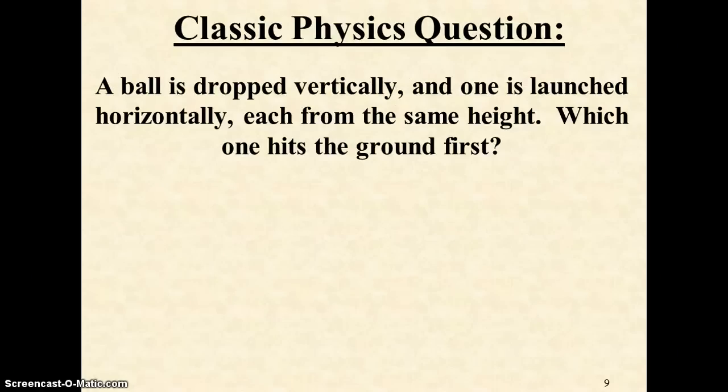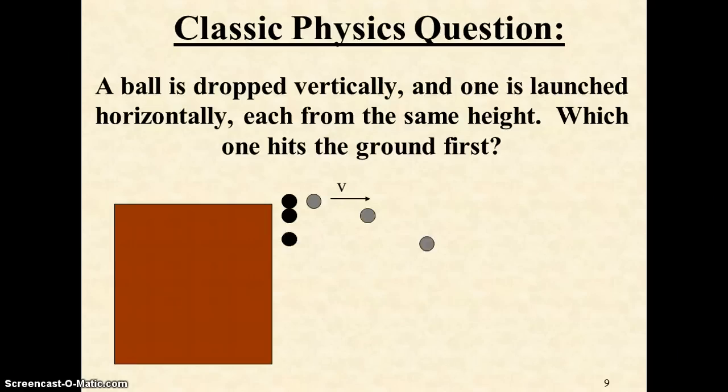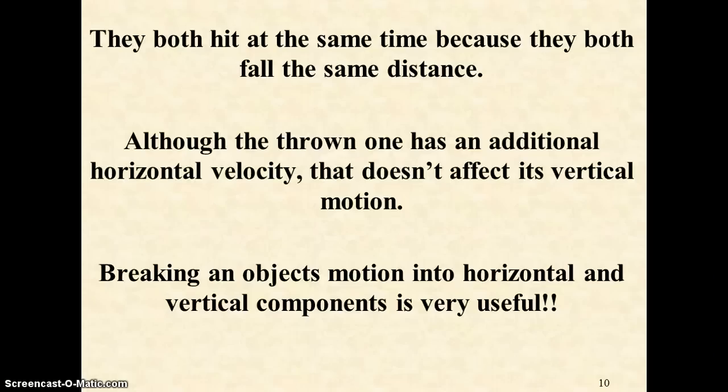This is a classic physics question. If you were to drop a ball vertically while also launching something horizontally, which would hit the ground first? As you saw in class, they hit the ground at exactly the same time. What's interesting is that in these equal snapshots, both pick up more distance downward with each time increment—they're getting faster downward due to gravity. However, the horizontally launched one has equal spacings horizontally because it has constant velocity forward. They hit different spots but at the same time.